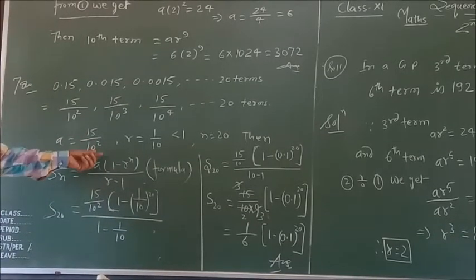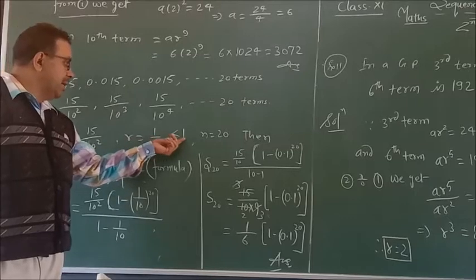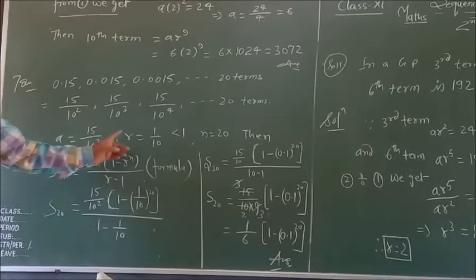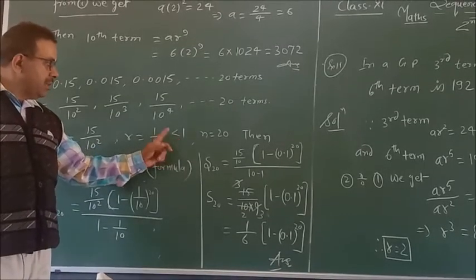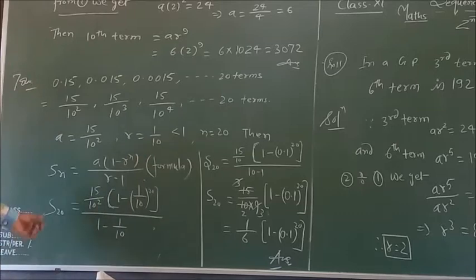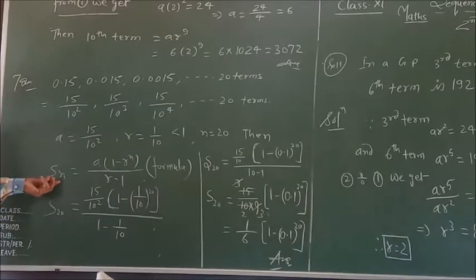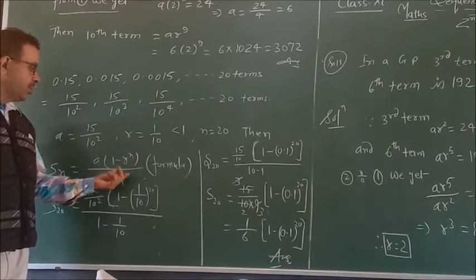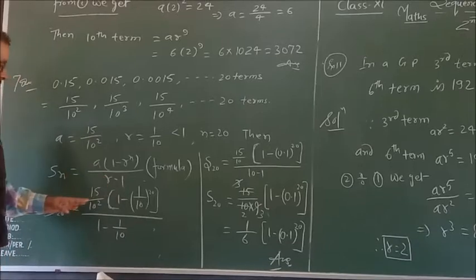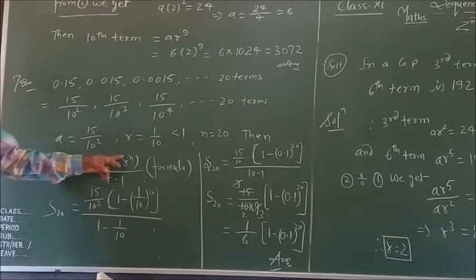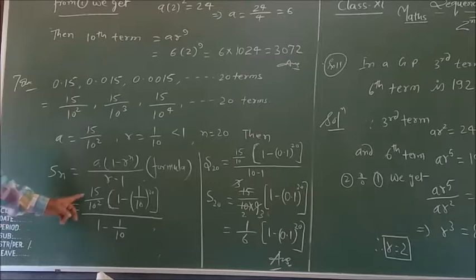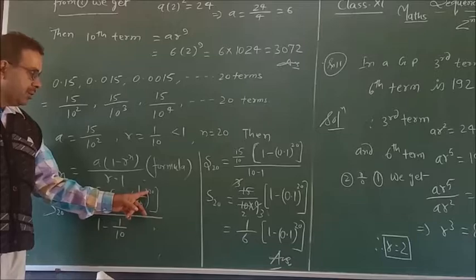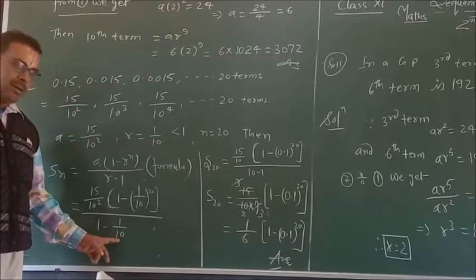Here the series can be written as 15/10, 15/10², 15/10³ ... up to 20 times. The value of a = 15/10, r = 1/10 which is less than 1, and n = 20. Since r < 1, we use the first formula: S_n = a(1 - r^n) / (1 - r).